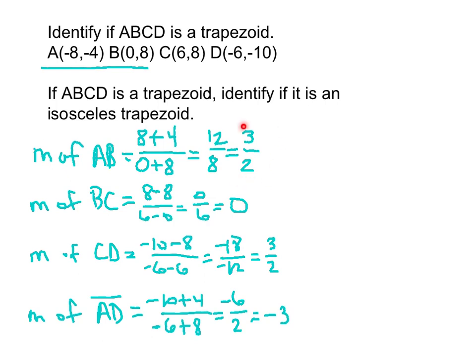Okay, so now what we're looking at is these four slopes. I have a slope of 3 over 2, a slope of 0, a slope of 3 over 2, and a slope of negative 3. Remember, all we need to have a trapezoid is one pair of opposite sides being parallel, and sure enough we see right here we have 3 over 2 and right here we have 3 over 2.